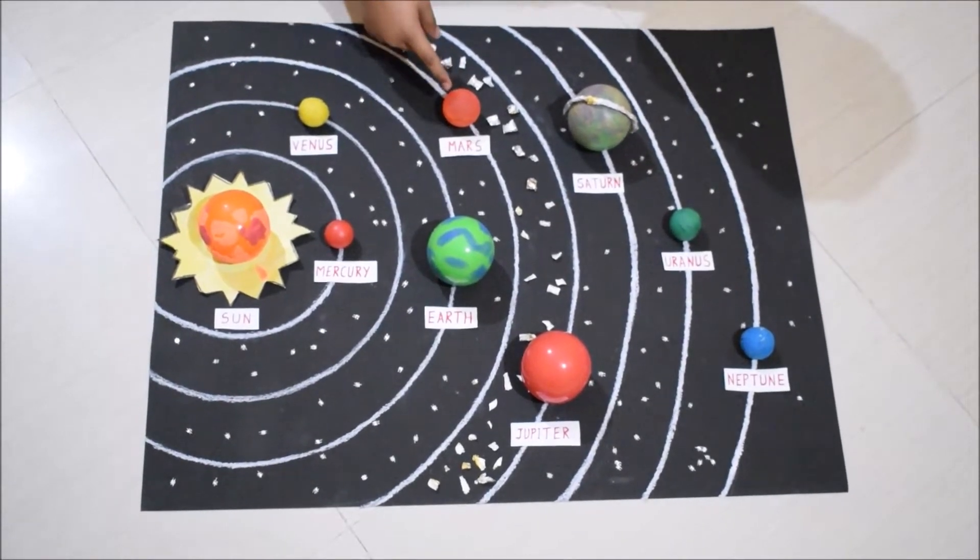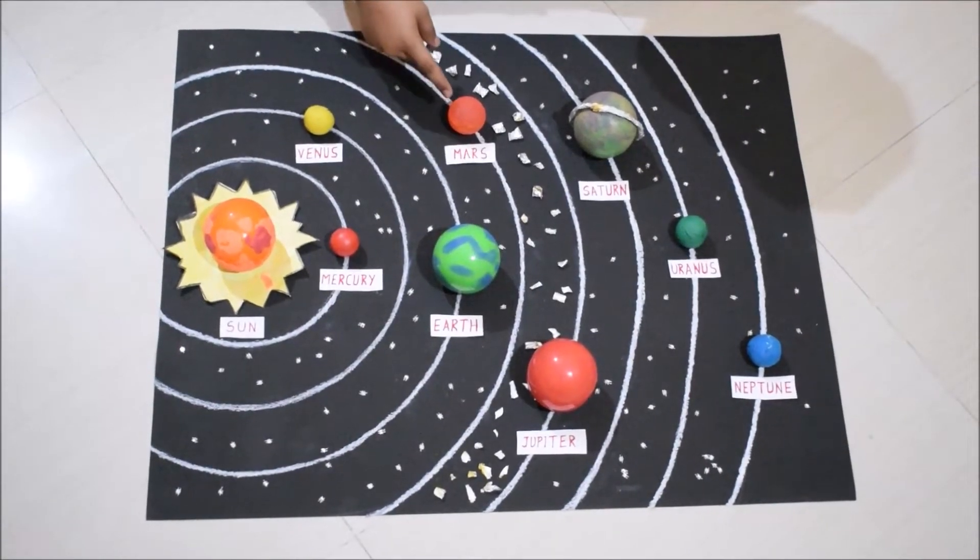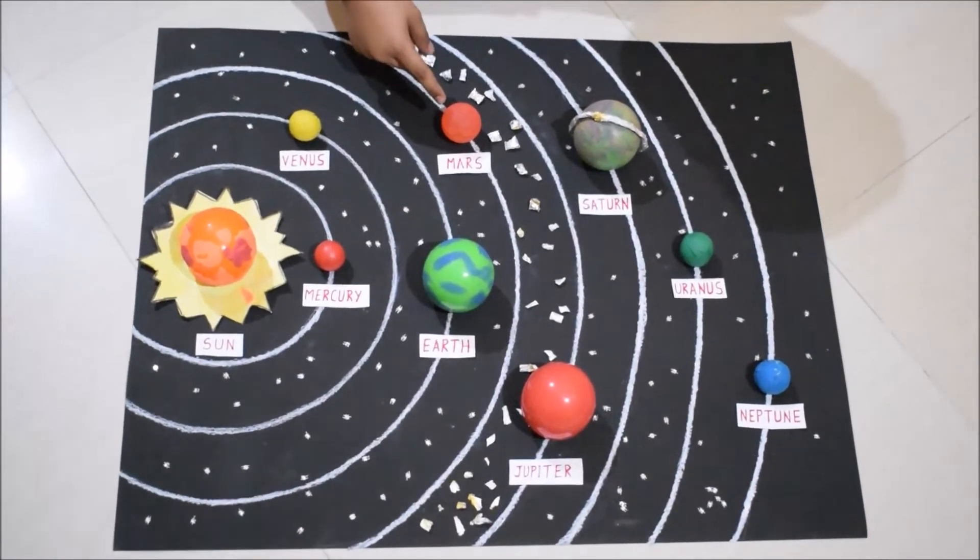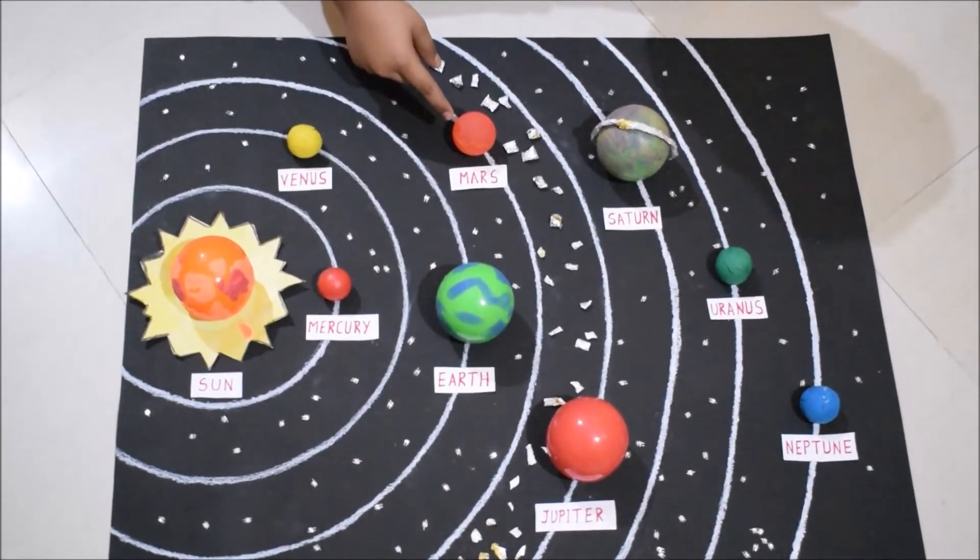Next is Mars. It is called the red planet due to its rusty iron oxide.